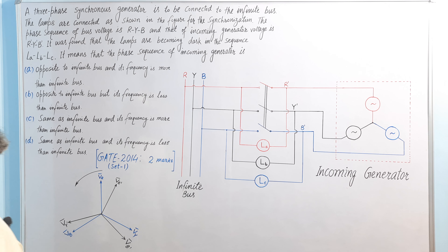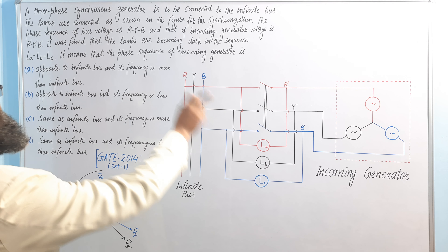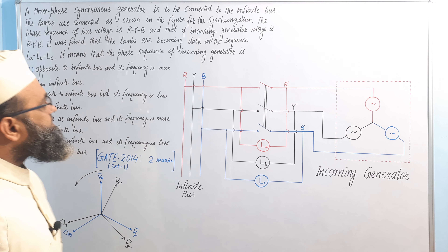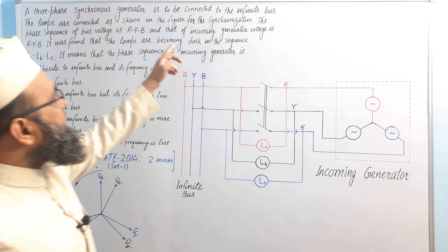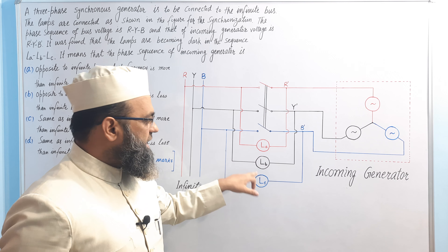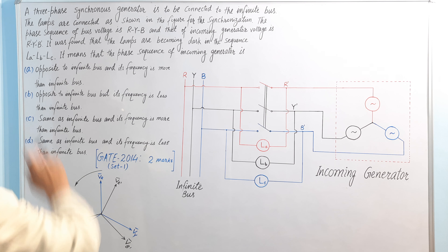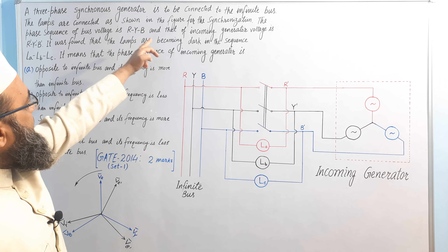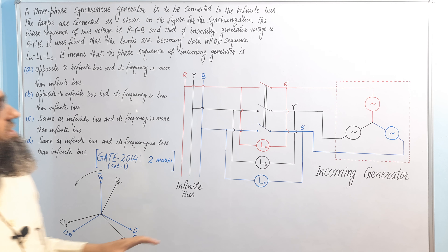The statement of this problem: a three-phase synchronous generator is to be connected to the infinite bus. The lamps La, Lb, and Lc are connected as shown in the figure for synchronization. The phase sequence of the bus voltage is RYB, and that of the incoming generator is R-dash, Y-dash, B-dash.